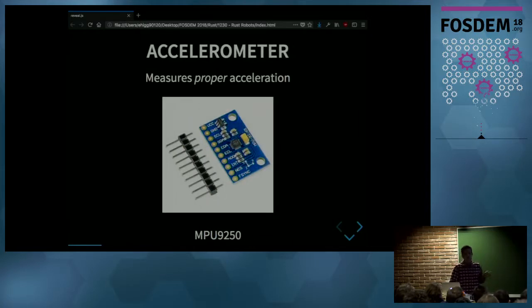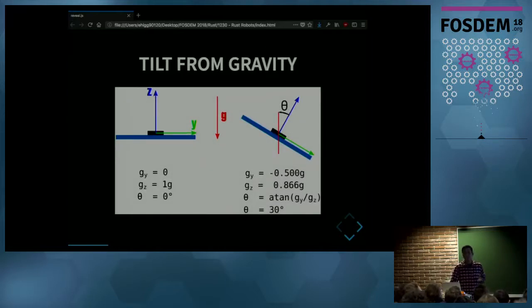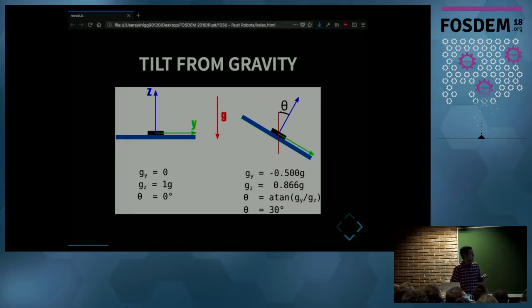We need to find that tilt angle. For that, we have an accelerometer on the robot. As the name implies, an accelerometer measures proper acceleration. The sensor I'm using is the MPU-9250. How do I get the tilt angle from the acceleration? Accelerometers, even when not moving, always sense gravitational acceleration. When the sensor is horizontal, the acceleration across X and Y axes are zero, but across the Z axis it's one times gravity — one G.